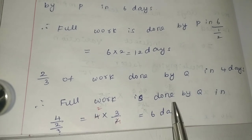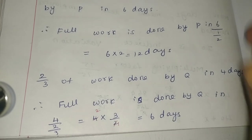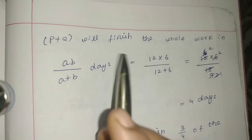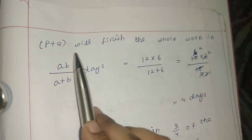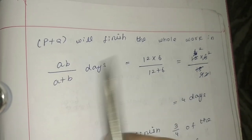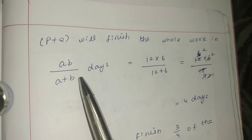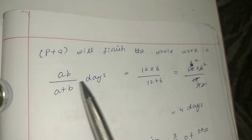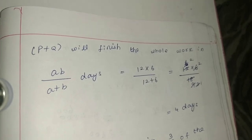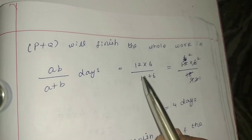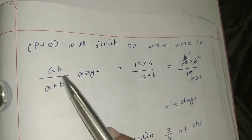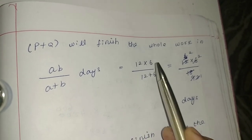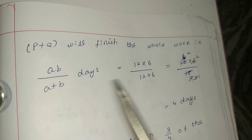If P and Q work together, we use the formula AB divided by A plus B days. P's value A is 12 and Q's value B is 6. So we calculate 12 into 6 by 12 plus 6.